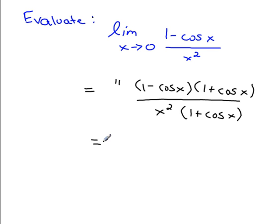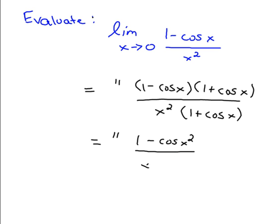I'm drawing a similarity between rationalizing and a question like this because the process is virtually the same. If you foil it like in the previous question, you would be left with 1 — because 1 times 1 is 1 — and when you foil the rest, you would see that 1 times cos x and negative cos x times 1 cancel out, leaving you with minus cos squared x from the multiplication of the last terms. And don't forget your denominators.